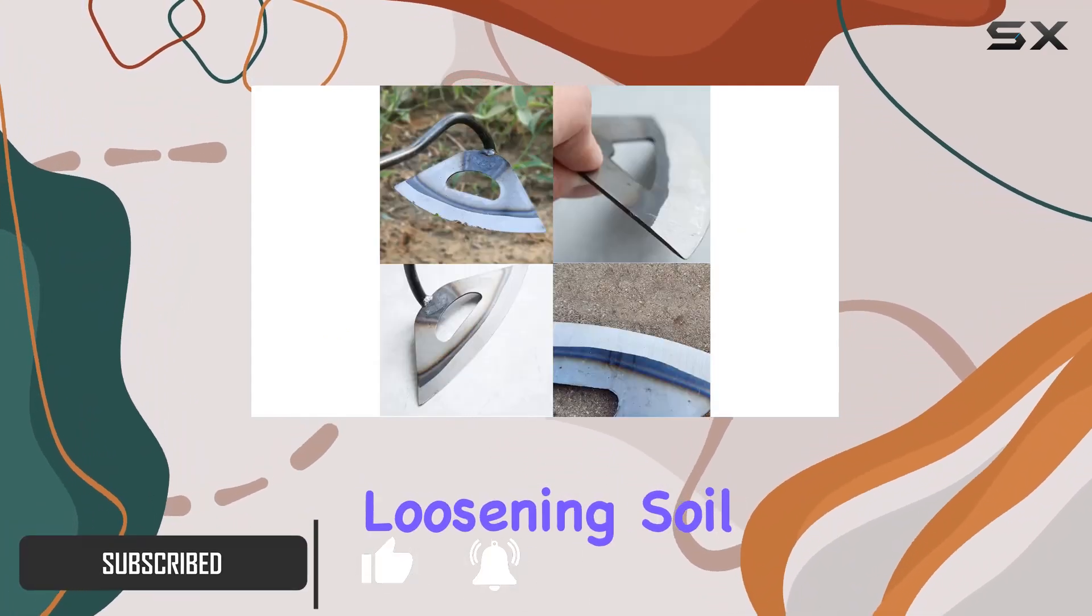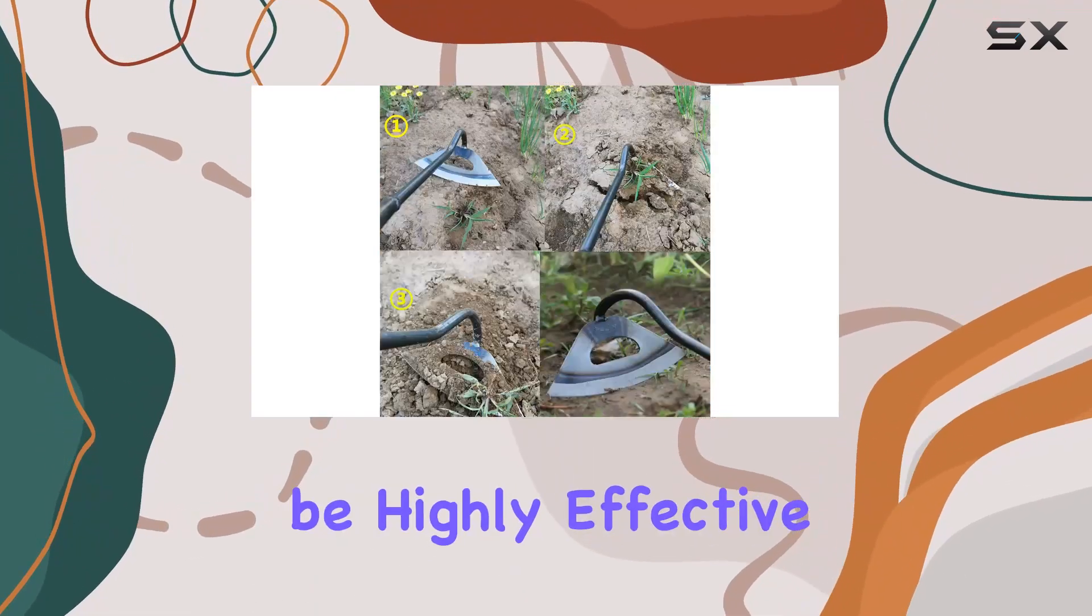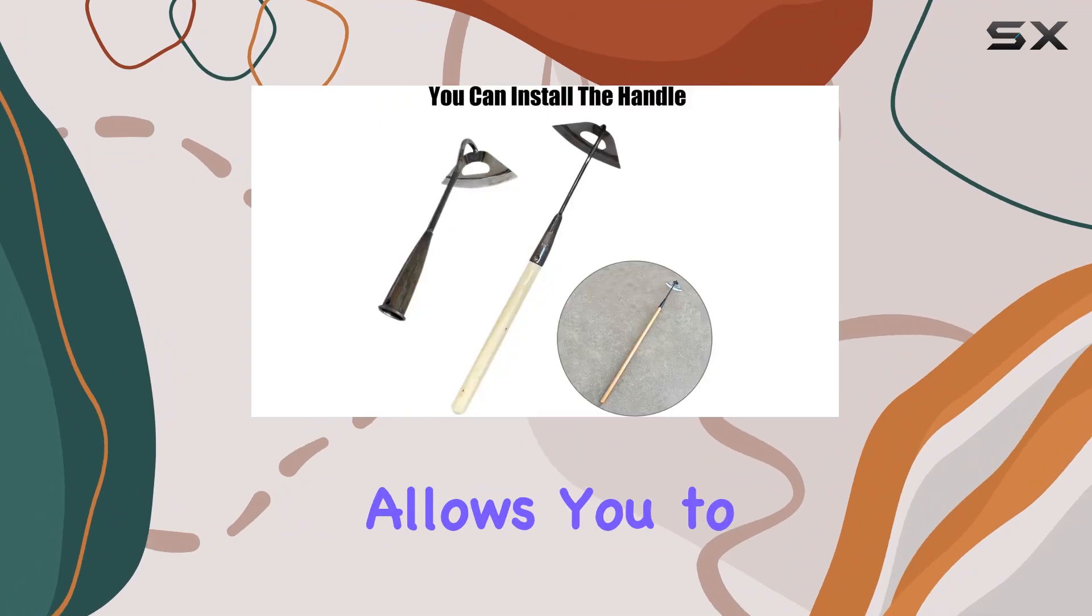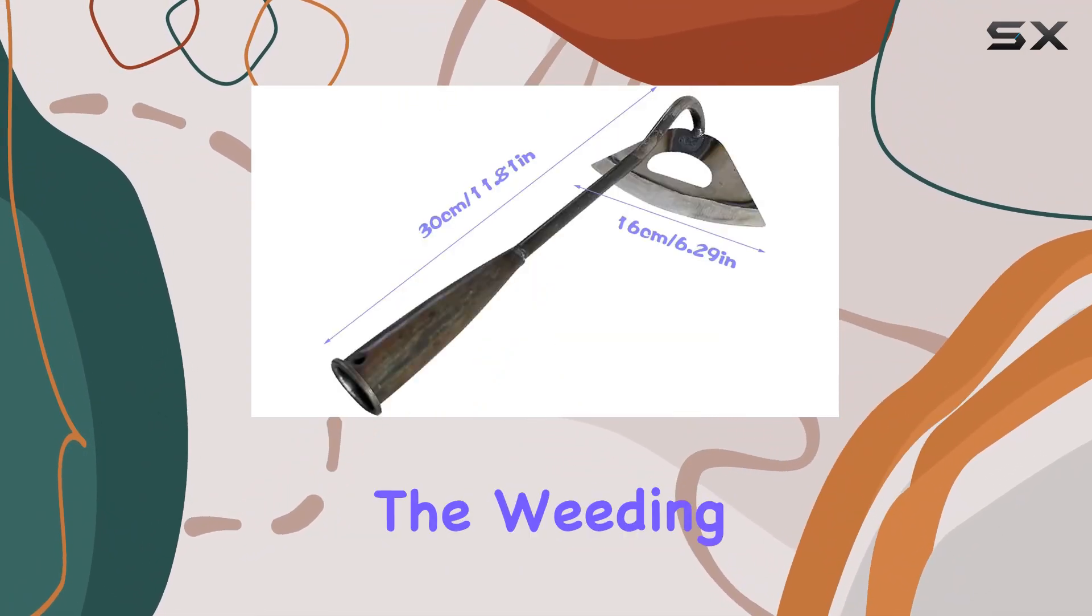Whether you're weeding, loosening soil, or planting vegetables, this hoe proves to be highly effective. The hollow design allows you to pull the hoe back effortlessly after extension, speeding up the weeding process.